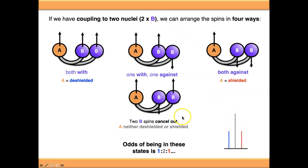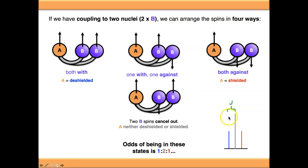So we have the signal for the two mixed states where the signal is neither shielded nor deshielded — unchanged from if it were a singlet — and the two outer signals where it has been deshielded and shielded respectively. That's why the triplet gives a 1:2:1 ratio. The J value can be measured from either adjacent gap — between the blue and gray, or between the gray and red — they should be the same since peaks are evenly spaced.